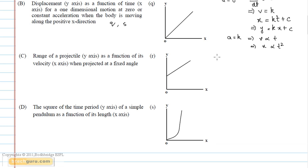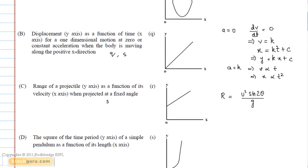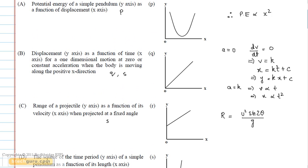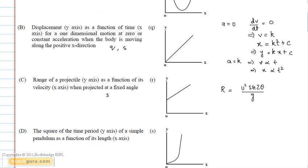In question C, we have to find the range of a projectile as a function of its velocity when projected at a fixed angle. The range of a projectile is given by R = u² sin2θ / g, where u is the initial velocity. The range is directly proportional to the square of the velocity at a fixed angle. Option P cannot satisfy this equation as range cannot decrease with increasing velocity. Therefore, the correct answer for question C is option S.